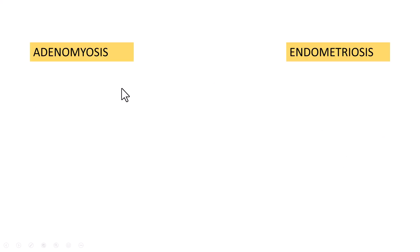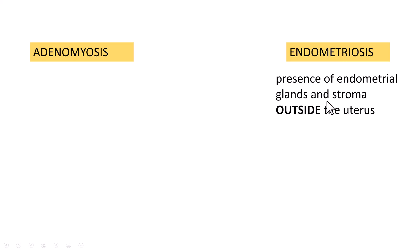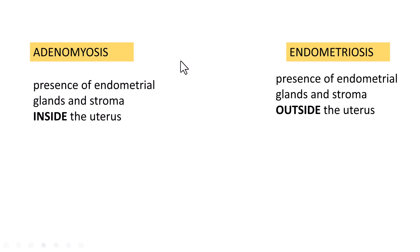Let us understand the differences between adenomyosis and endometriosis. Endometriosis is the presence of endometrial glands and stroma outside the uterus — basically endometrium outside the uterus. Whereas adenomyosis is endometrium within the myometrium, that is within the uterus — presence of endometrial glands and stroma inside the uterus.